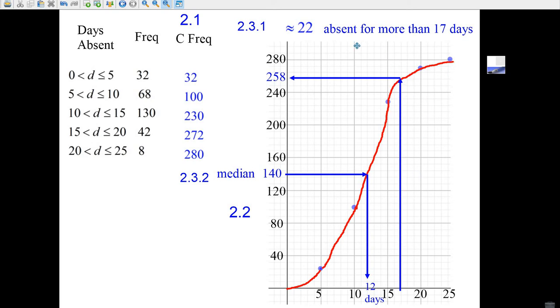Now the next question says, estimate how many people have been away for more than 17 days. Well, go to 17 on the bottom, go up to your curve and go over. I think it's about 258. Well, 280 minus 258, it looks like 22 people have been absent for more than 17 days.